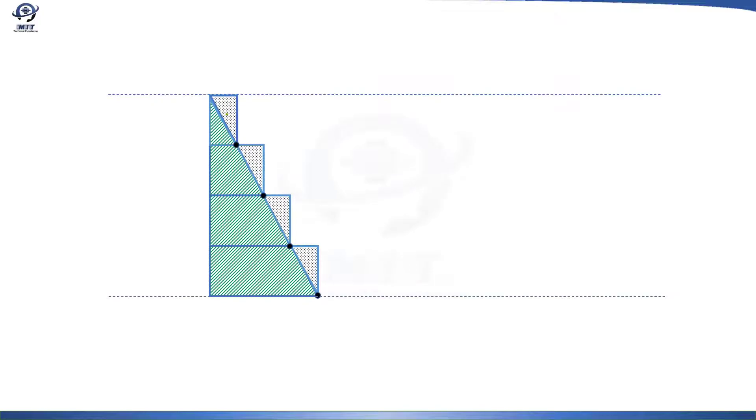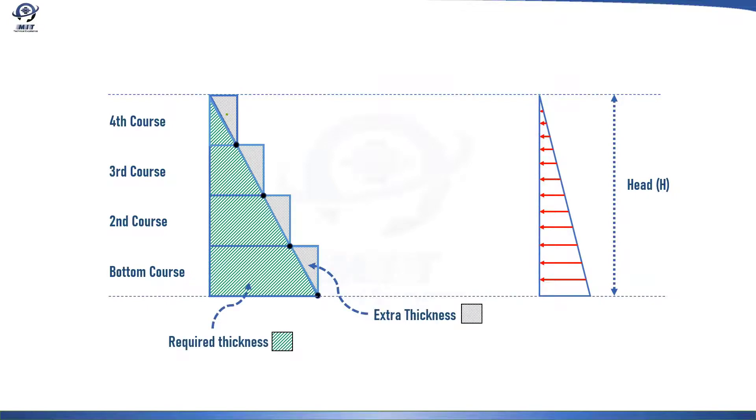For a storage tank, the hoop stress is mainly developed due to static head of the stored liquid. So the profile of the stress will be like shown here. And often for medium and larger diameter tanks, we can select lower thicknesses for plates on top shell courses and the stress will be lower due to lower hydrostatic head on the top shell courses.